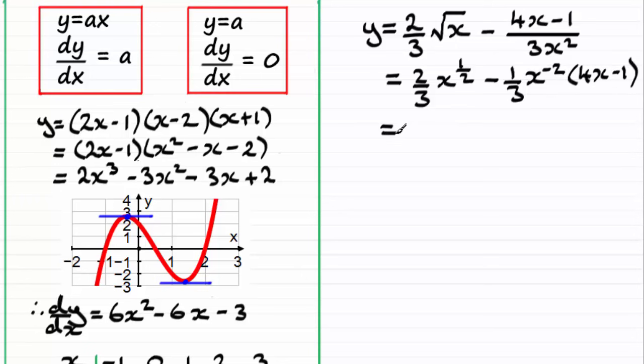And so what I'd want to do next is to expand that bracket. And so if we multiply the minus third x to the power minus 2 with 4x, we're going to get minus four thirds. And then we would add the powers minus 2 to the 1 there. That's going to give me x to the power minus 1. And then minus the third x to the minus 2 times the negative 1 there is going to give me plus one third x to the power minus 2. So I've got each of these terms here in the form ax to the power n. So I can differentiate them in the normal way.